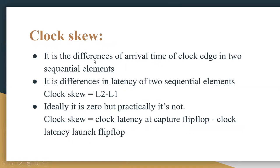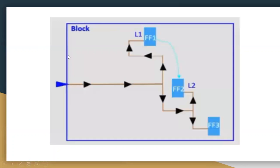Clock skew is nothing but the difference of arrival time of clock at two sequential elements. If you observe this block, it contains three flip-flops. The blue highlighted arrow is nothing but the clock, distributed to flip-flop one, flip-flop two, and flip-flop three. Flip-flop one has latency L1, flip-flop two has latency L2, and flip-flop three has latency L2.